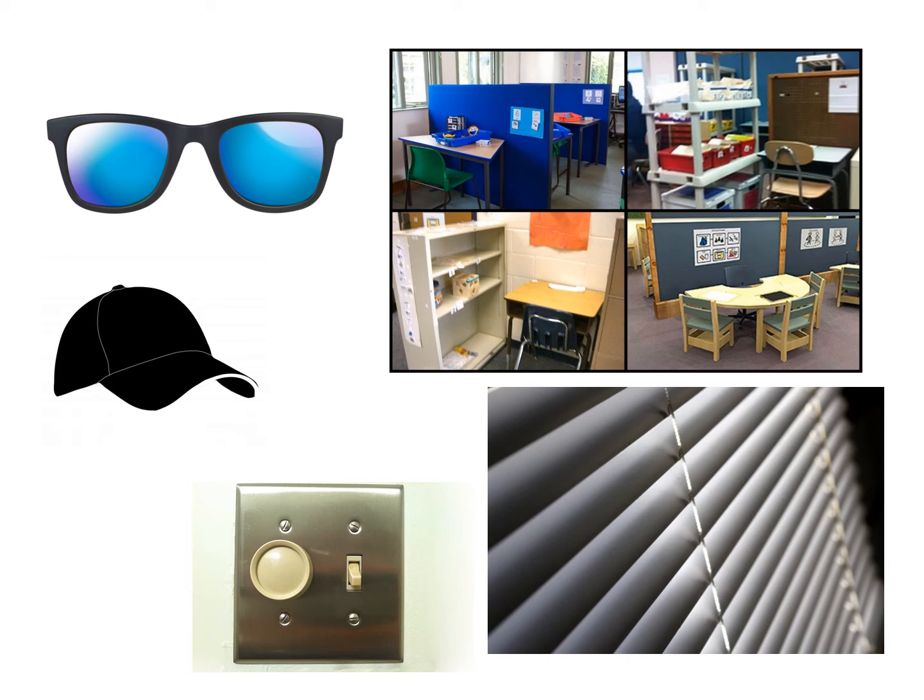Reducing the clutter in the room, having minimal pictures on walls, and wearing sunglasses can help to reduce levels of visual stimulation. Dimmer switches and blinds can reduce the light to a more tolerable level.